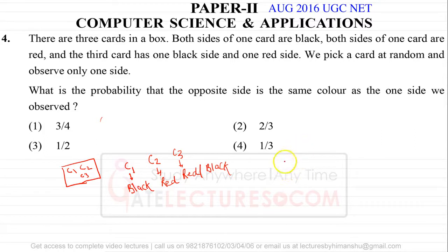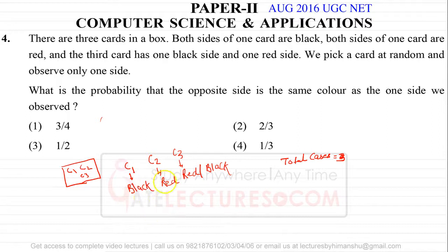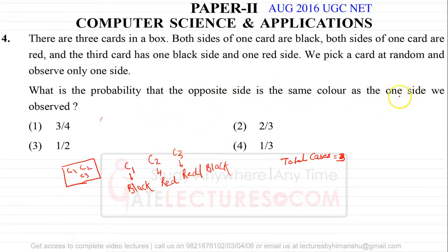There are three cases. First, you pick card C1, and C1 is black from both sides. Second case, you pick card C2, and C2 is red from both sides. Third, you pick C3, which has one red side and one black side. Favorable cases are the ones we want — we want the opposite side to be the same color as the one side we observed.